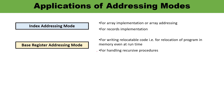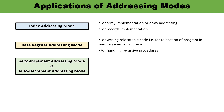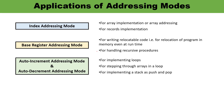Finally, let us discuss auto increment and auto decrement addressing modes. These are similar to register indirect mode, but the content of the register is automatically incremented or decremented after data access. These addressing modes can be used for implementing loops, implementing a stack — such as push and pop operations — or for stepping through an array in a loop. You must remember all of these applications of addressing modes.